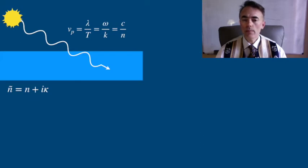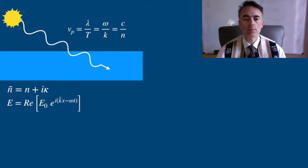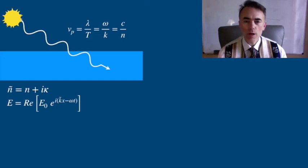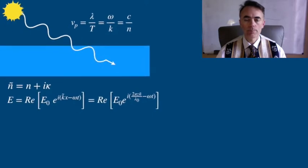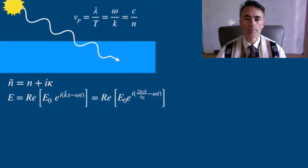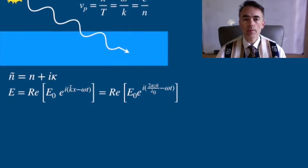If we write a propagating plane wave in exponential complex notation, if we now, instead of writing the wave number k, we write it in terms of the distance traveled 2π over lambda, but keeping in mind that we are in a medium of index of refraction n tilde, then we can separate this.